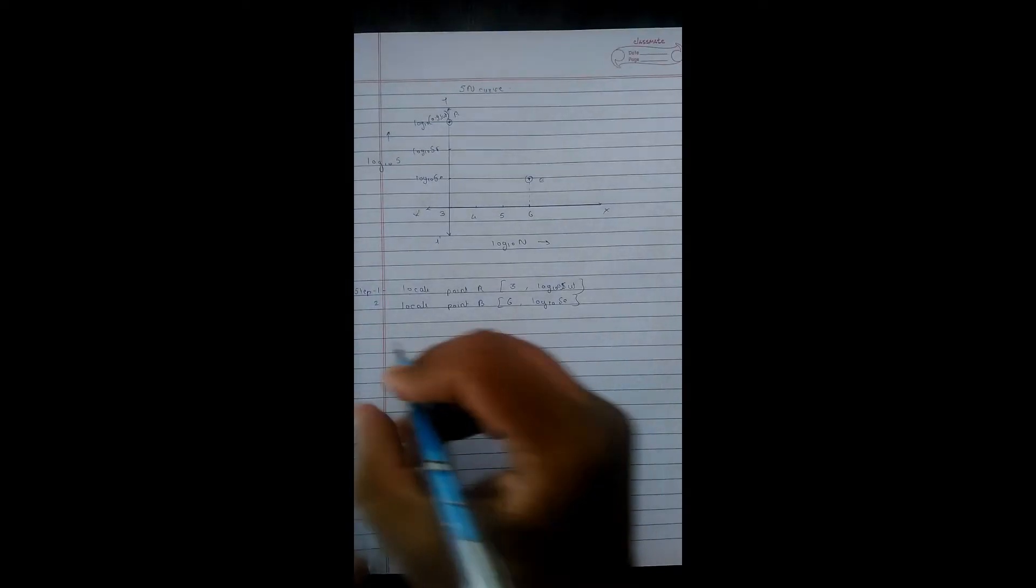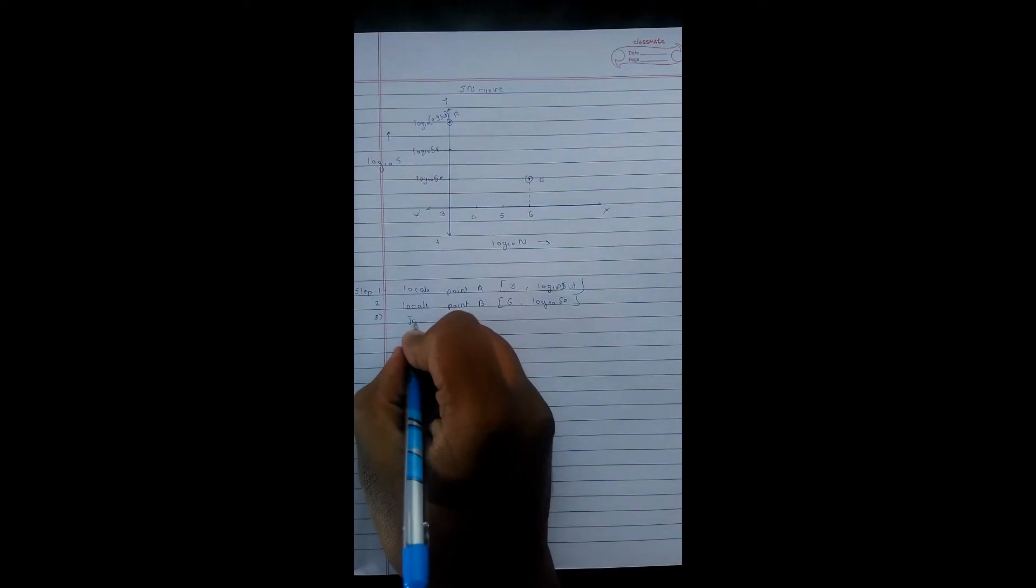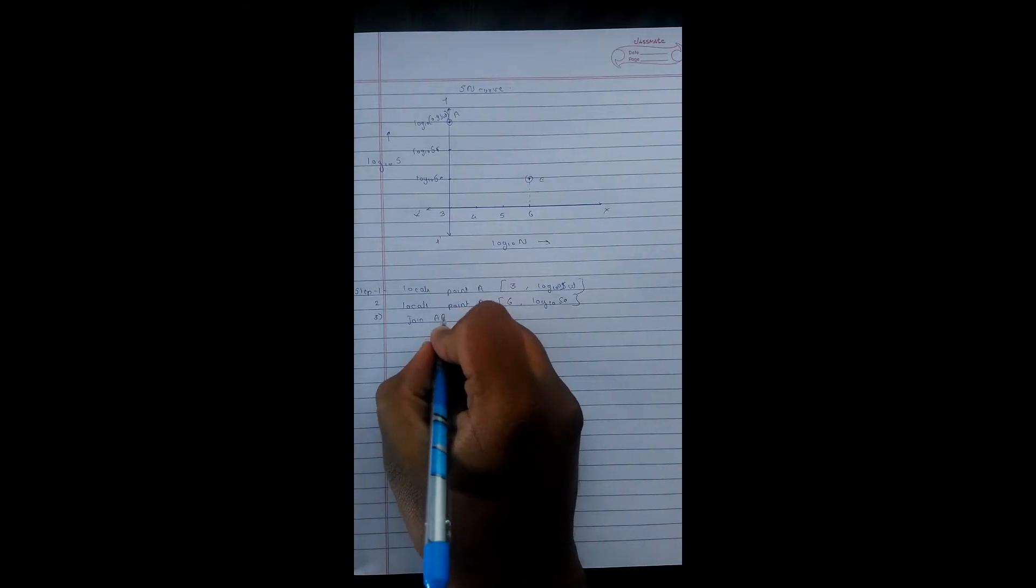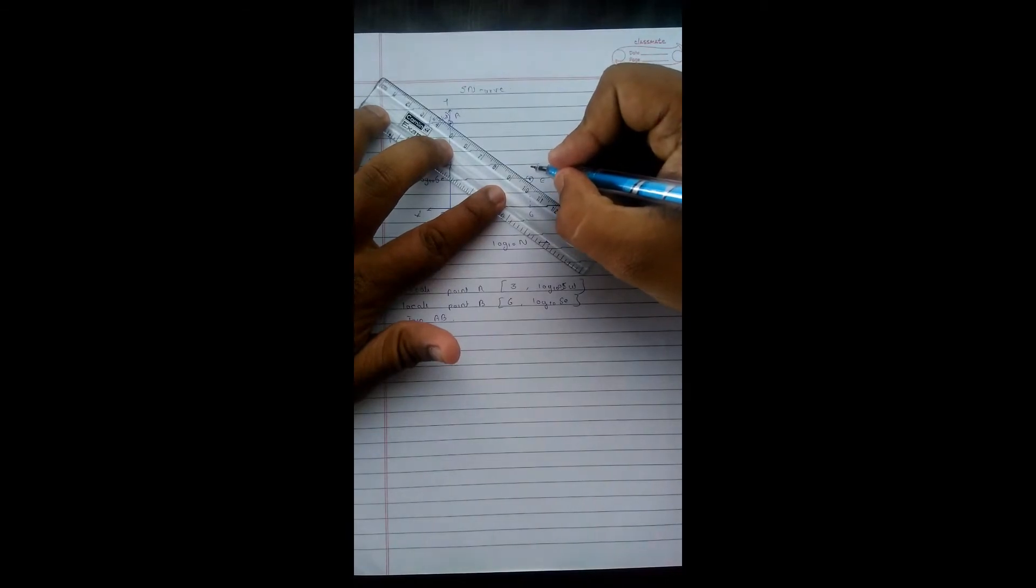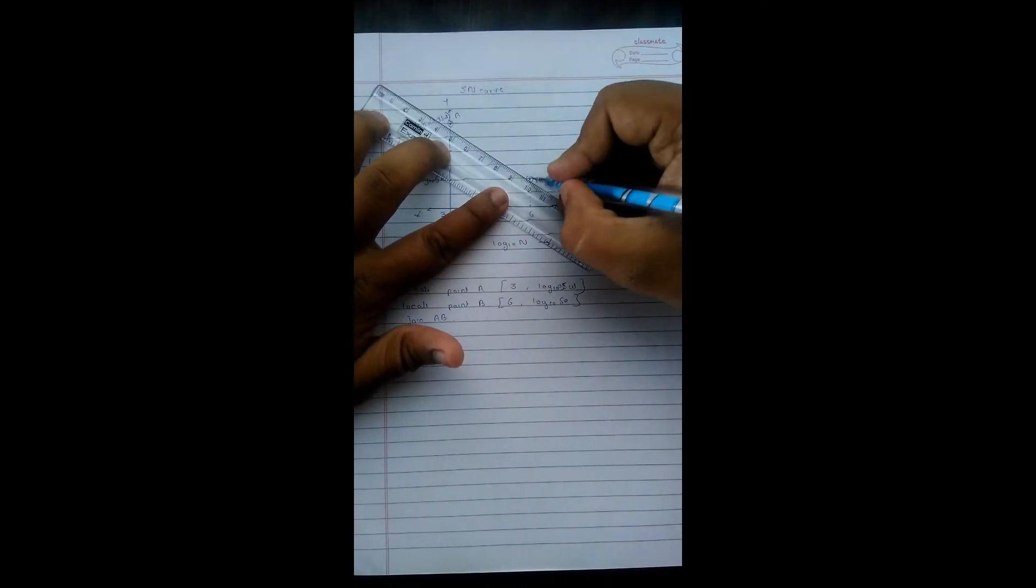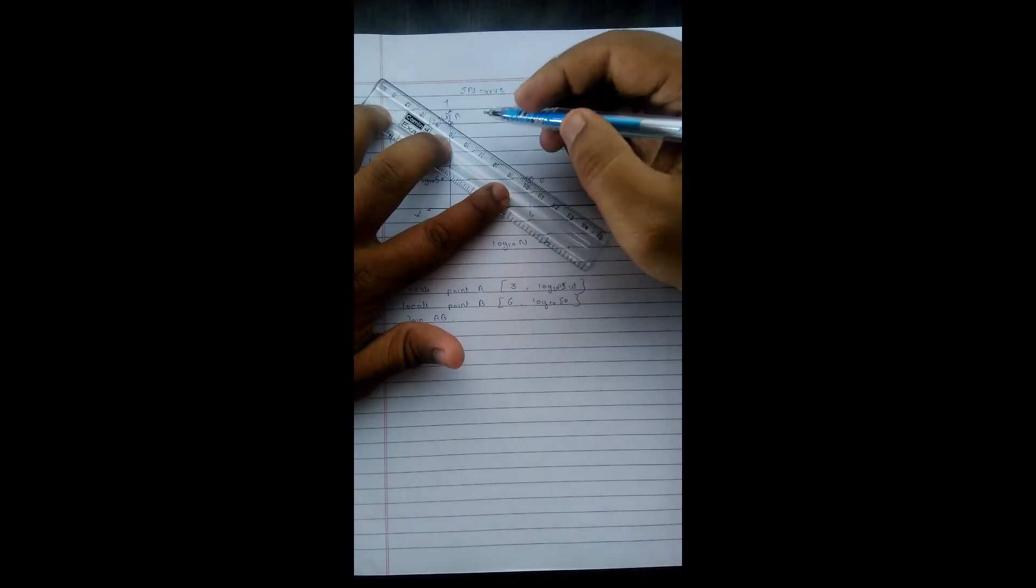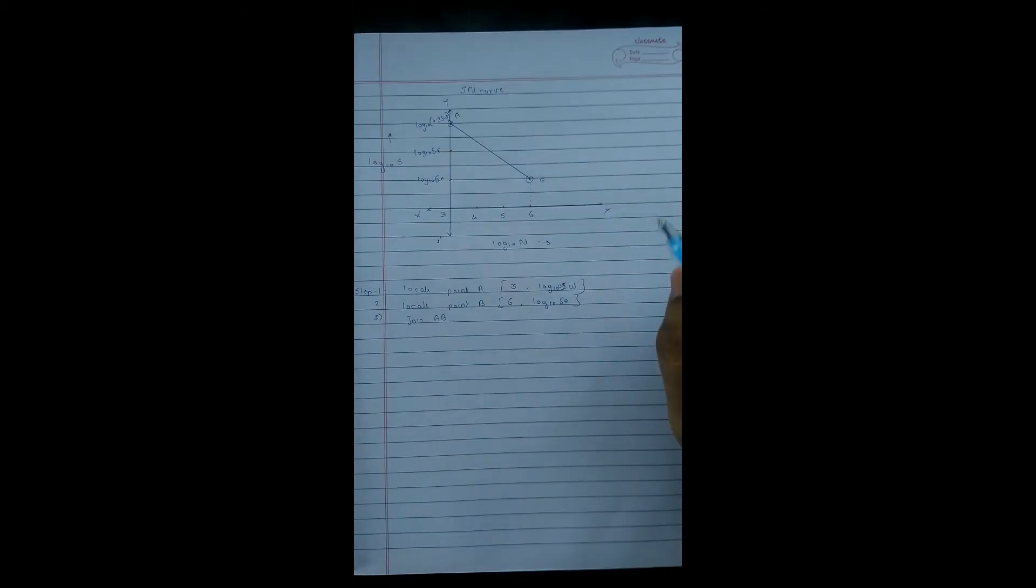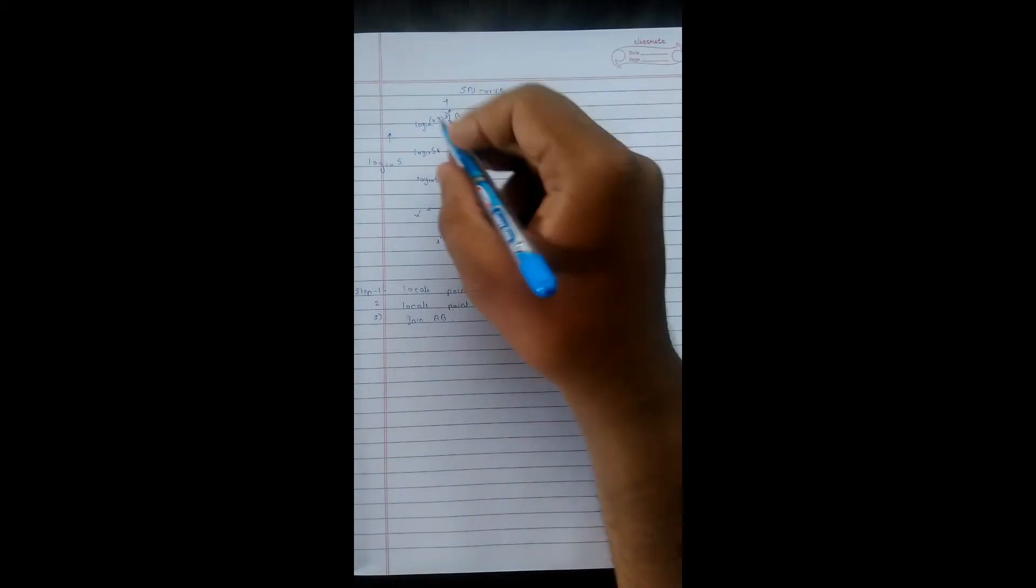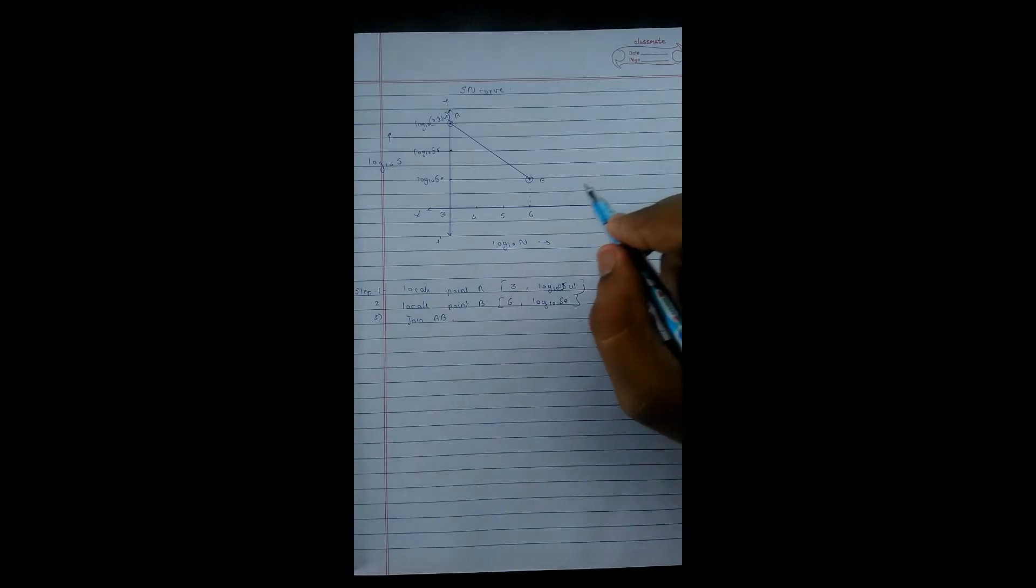Now what I have to do is proceed for the next step which is join A and B. Joining A and B, this line AB is used as a criteria of failure for finite life. You can say this line is used as a criteria for failure of finite life.